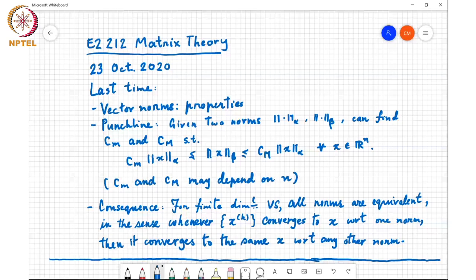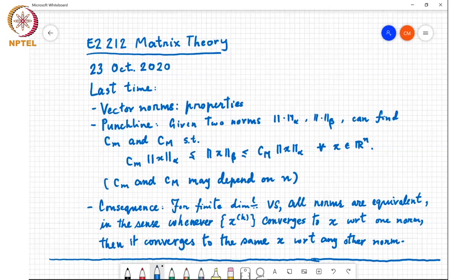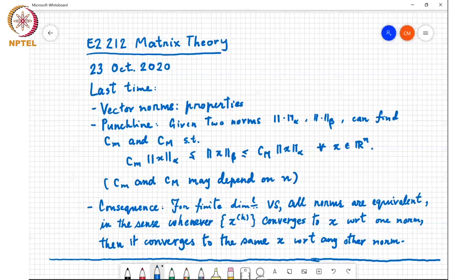Last time we were looking at properties of vector norms, and the punchline was that given two norms alpha and beta, we can find constants c small m and c capital m such that the beta norm of x is sandwiched between c small m times the alpha norm of x and c capital m times the alpha norm of x.